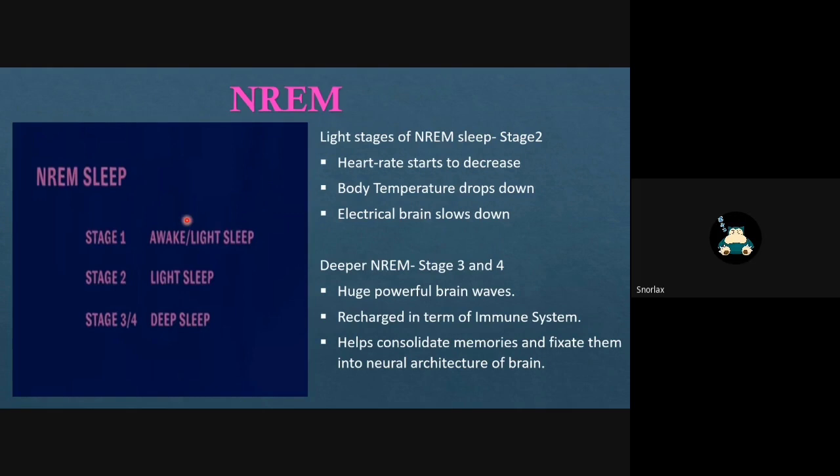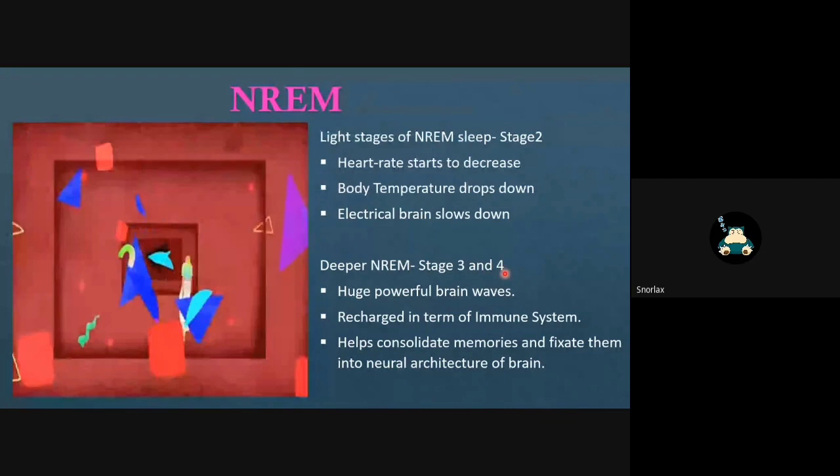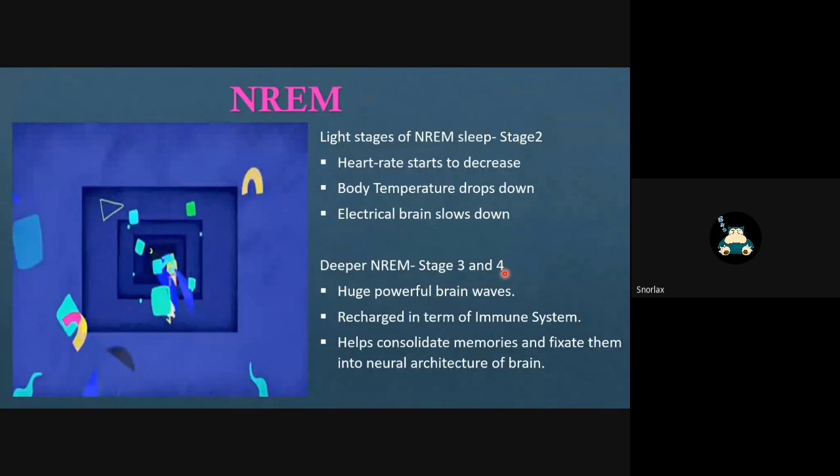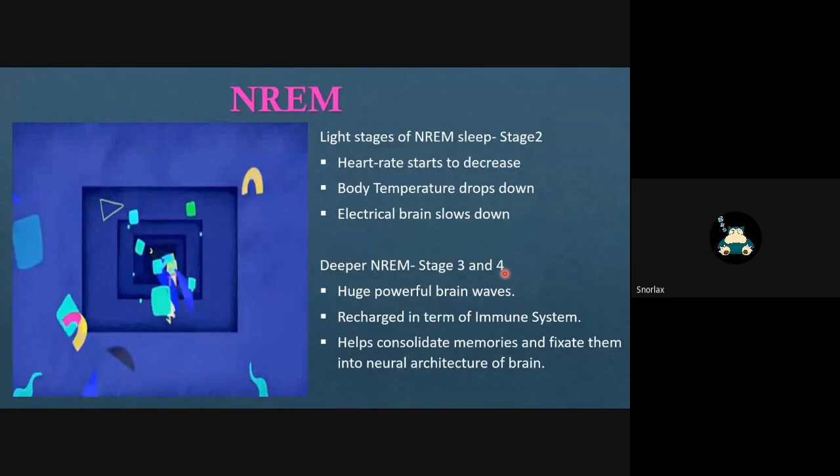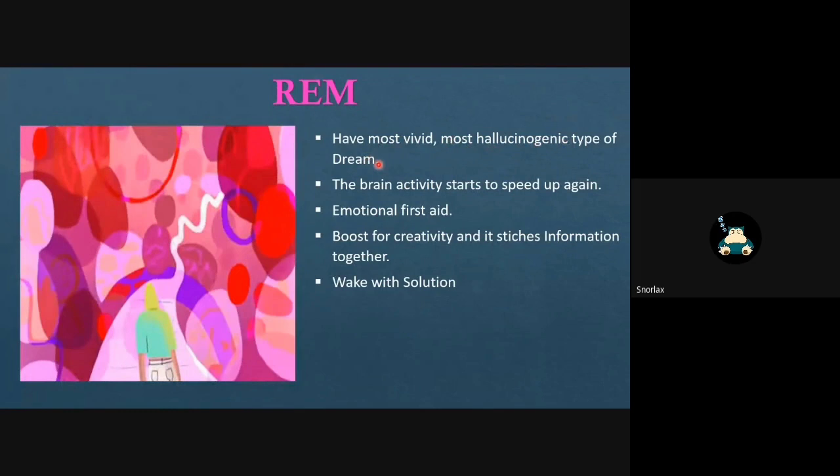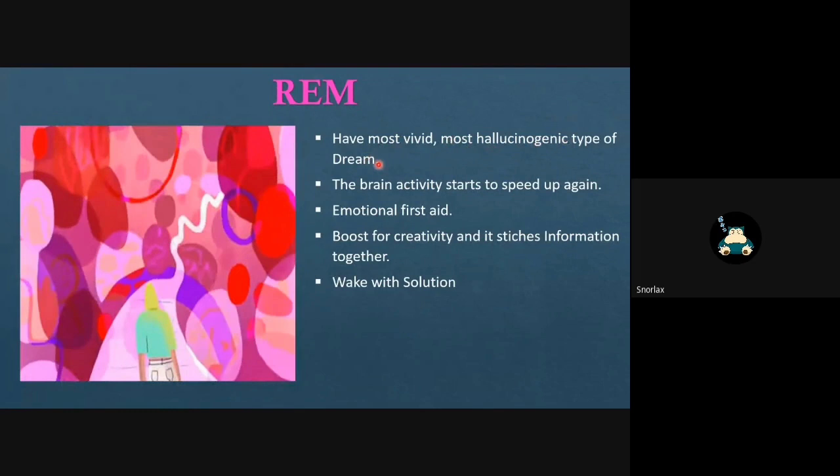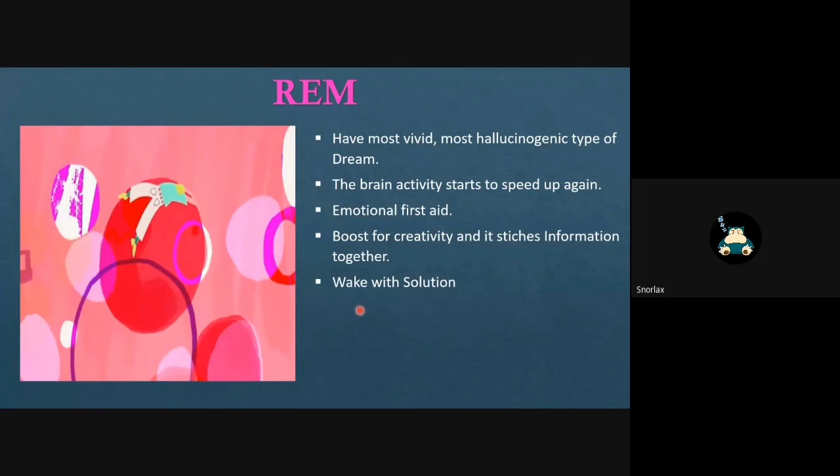Non-REM is further divided into four stages. Stage one is called awake or light sleep. Stage two is called light sleep. And stage three or four is called deep sleep. As we move into stage two of non-REM sleep, our heart rate starts to decrease, body temperature drops down, and electrical brain waves slow down. As we move deeper into non-REM, stages three and four, there are huge powerful brain waves. In this stage, we are recharged in terms of immune system. This stage helps consolidate memories and fixate them into the neural architecture of our brain. Next stage is REM sleep. In this stage, we have the most vivid and most hallucinogenic type of dreams. Brain activity starts to speed up again. We get emotional first aid and it also provides a boost for creativity which stitches information together. So we wake up with the solution to previously impenetrable problems.